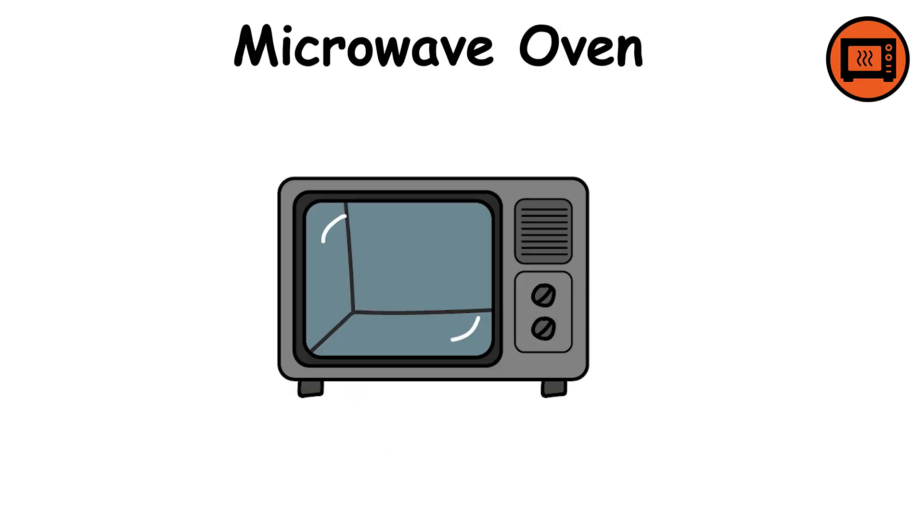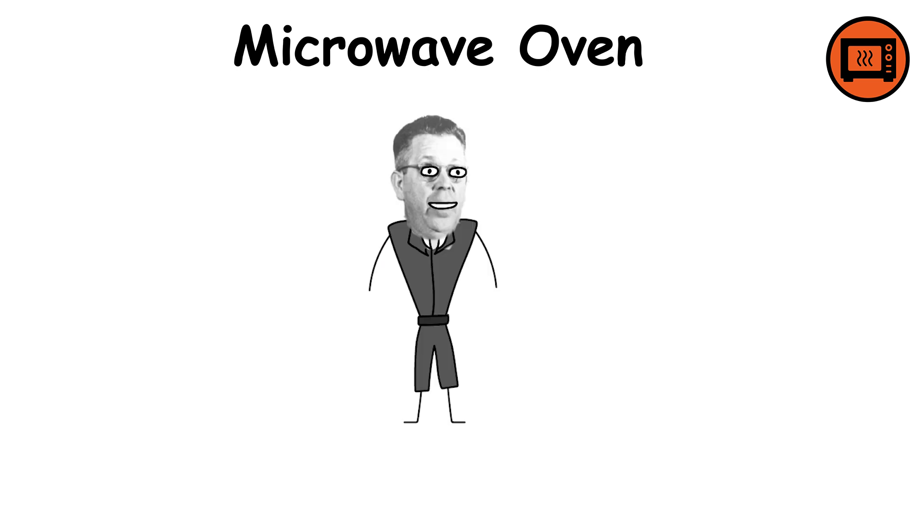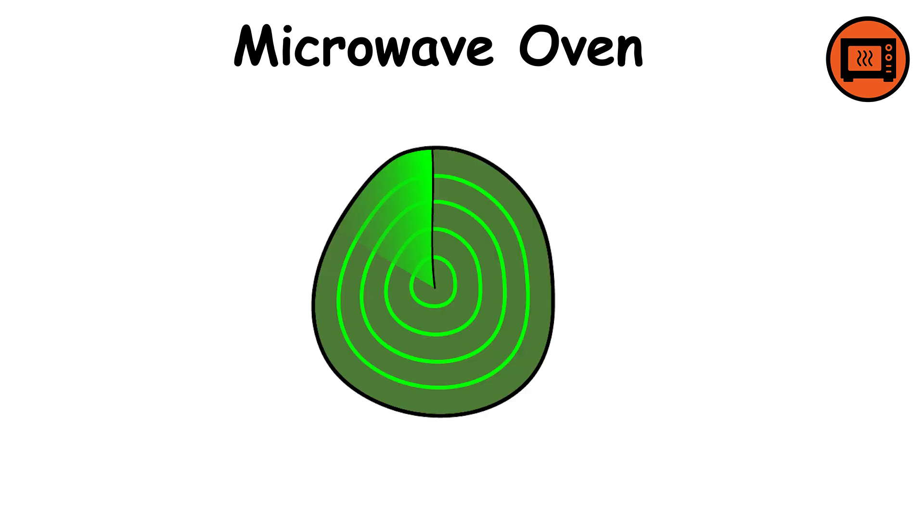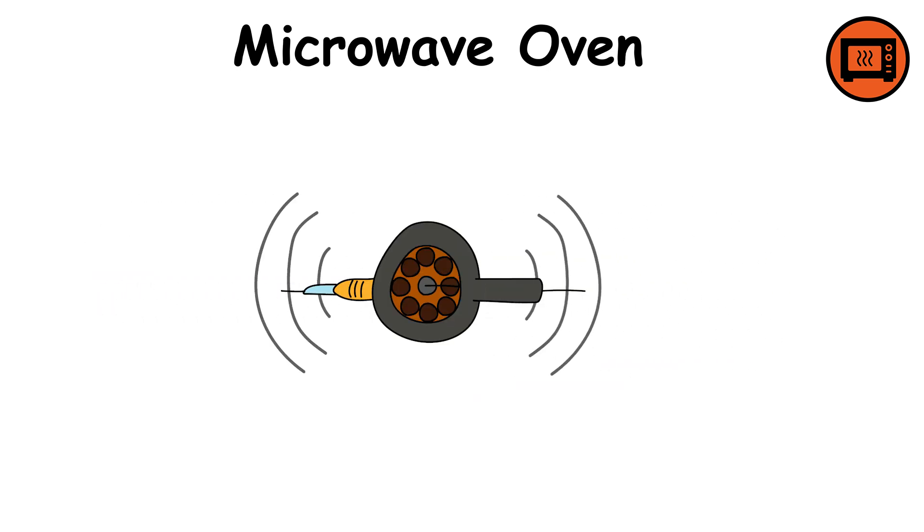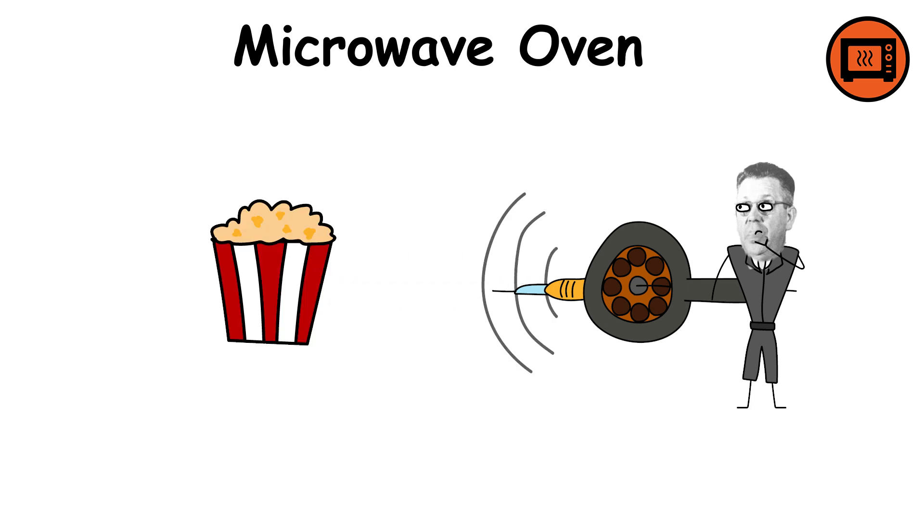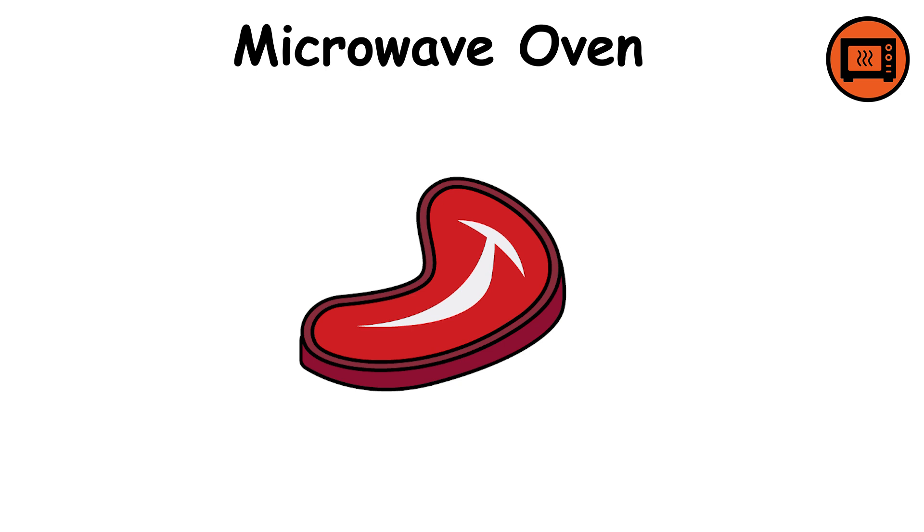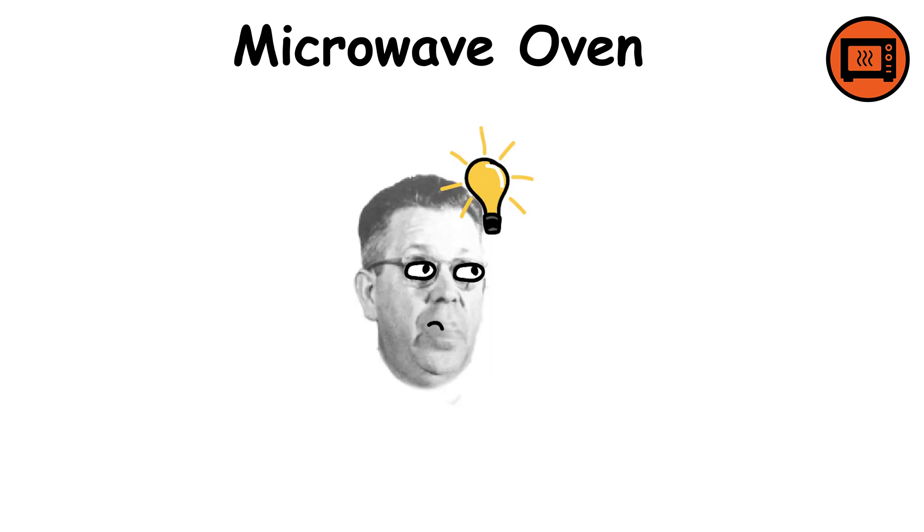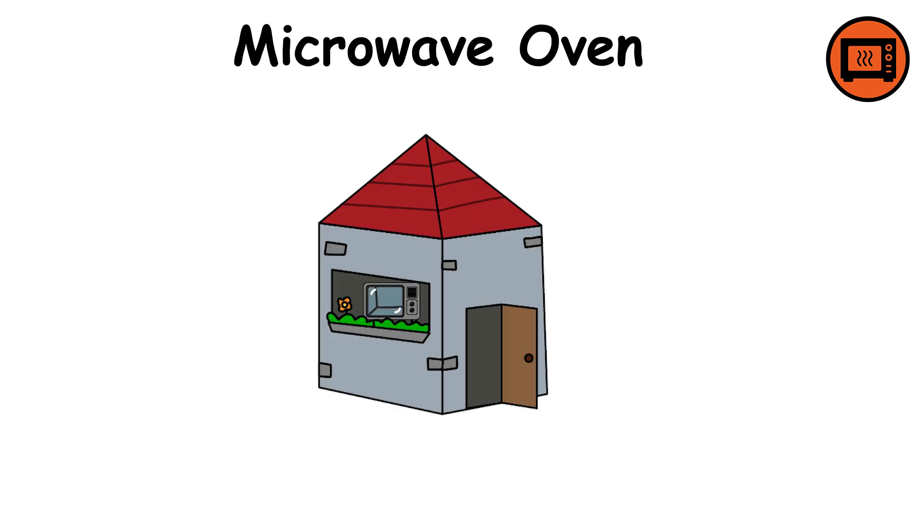Microwave Oven. The microwave oven was invented accidentally in 1945 by engineer Percy Spencer while working with radar equipment. He noticed that a candy bar in his pocket had melted near an active magnetron, a device that emits microwaves. Curious, he tested the effect on popcorn, and later on an egg, which exploded, confirming the power of microwave energy to heat food quickly. Spencer's discovery led to the first commercial microwave oven, which eventually became a common household appliance by the 1970s.